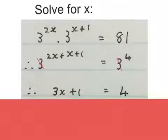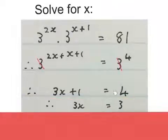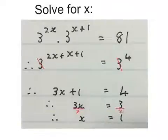Then we drop the bases, because the bases are the same, and this is 3x plus 1 I write down with equal to 4. Then you minus 1 on both sides. Then we divide by 3 on both sides, and the final answer is x equals to 1.